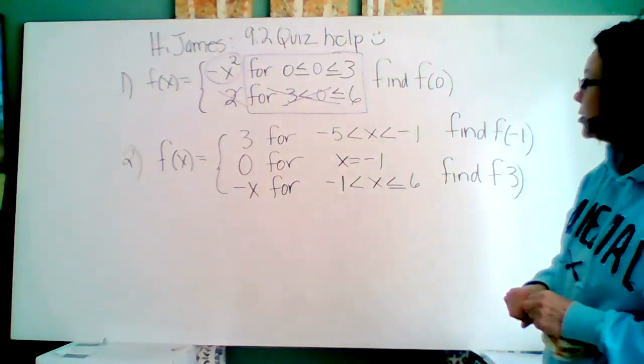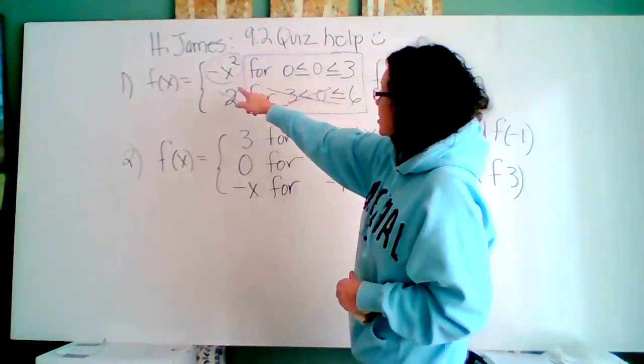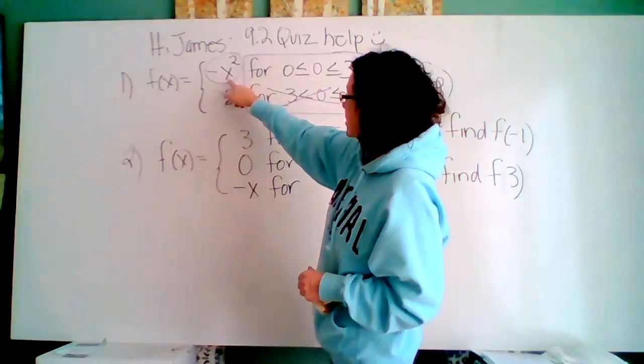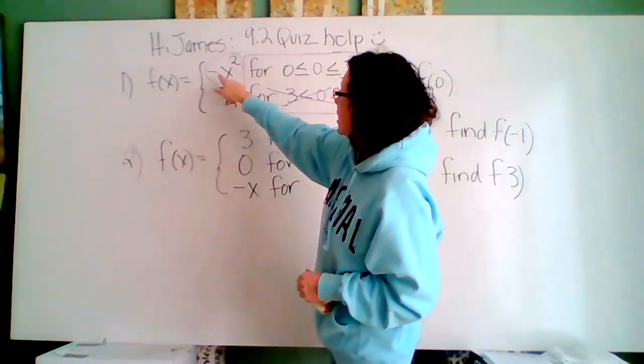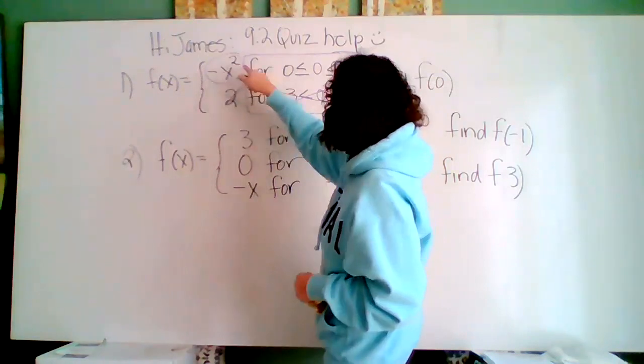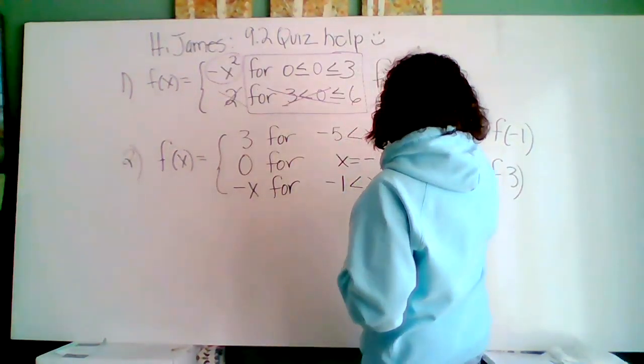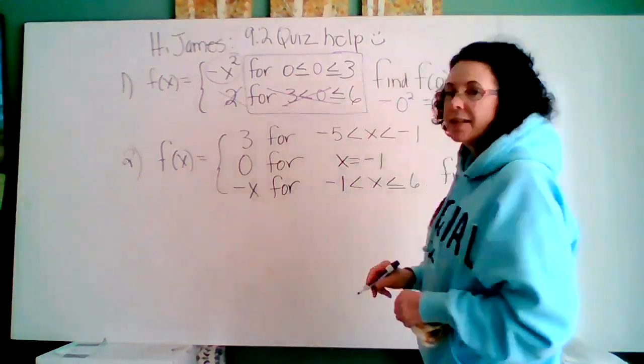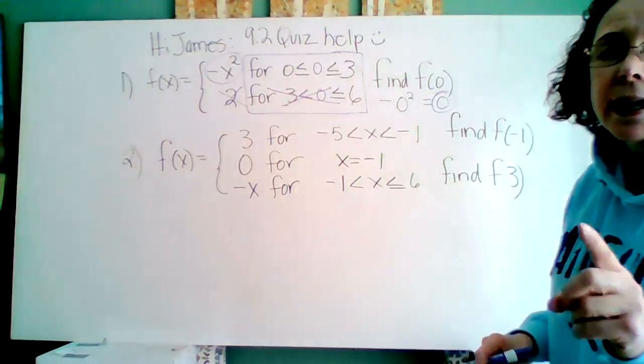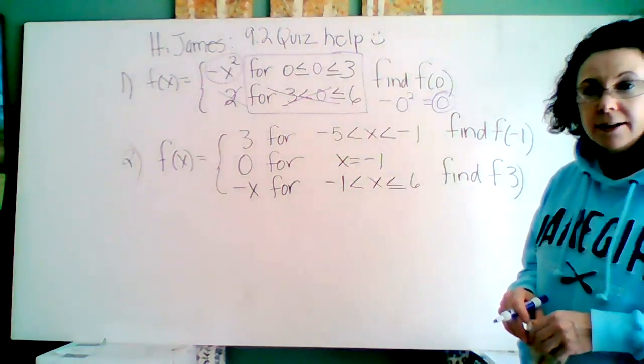So what do I do next? I'm going to use this function. They told me x is zero. So I'm going to put a zero in negative zero squared equals zero. And that is my final answer for one x. I only have one y.